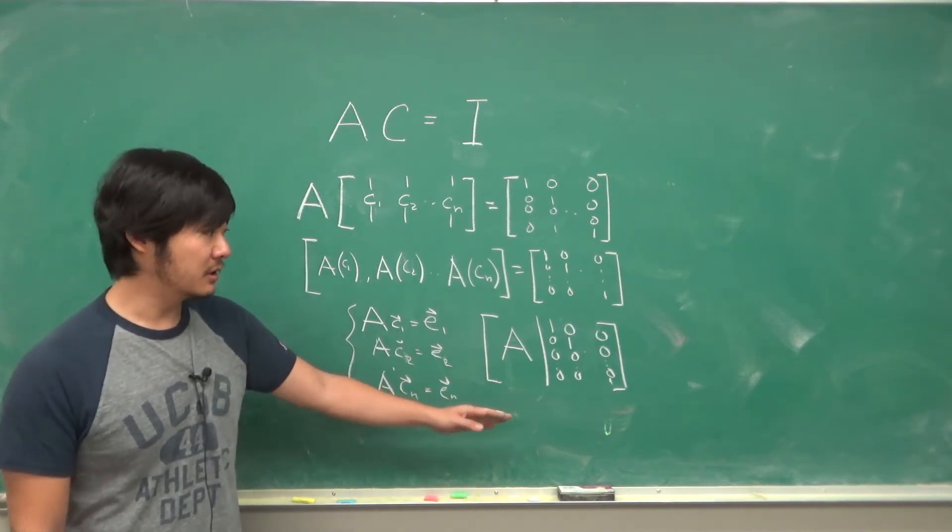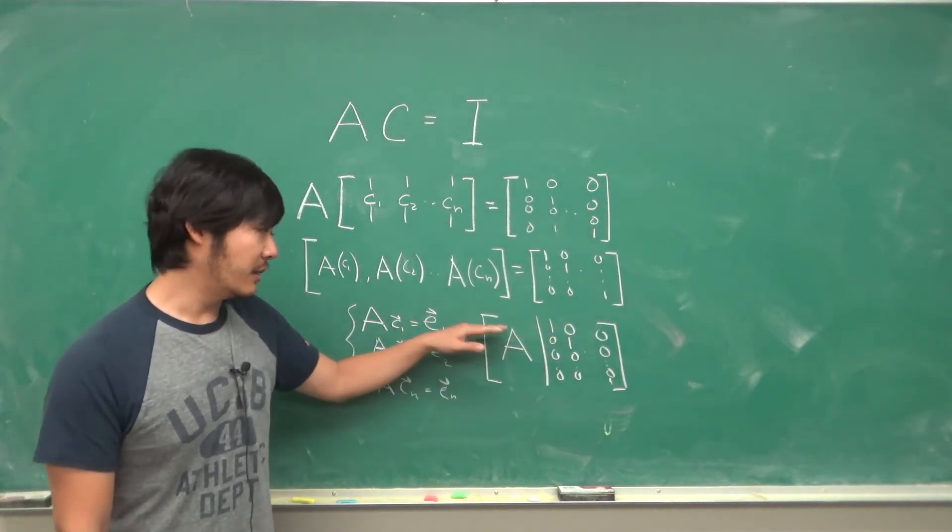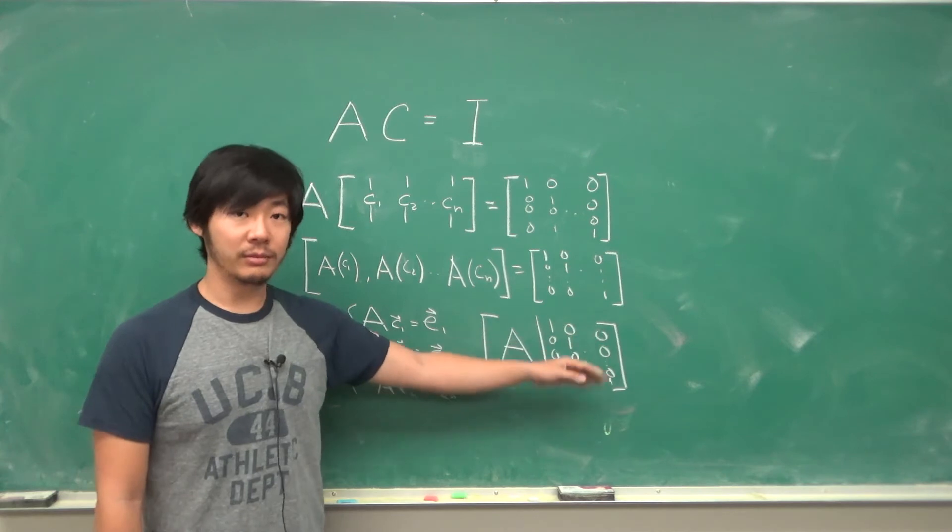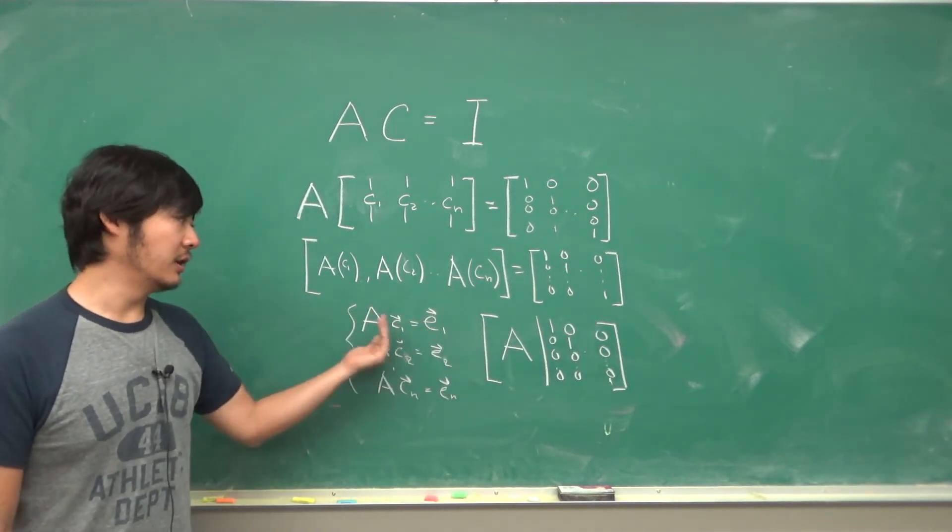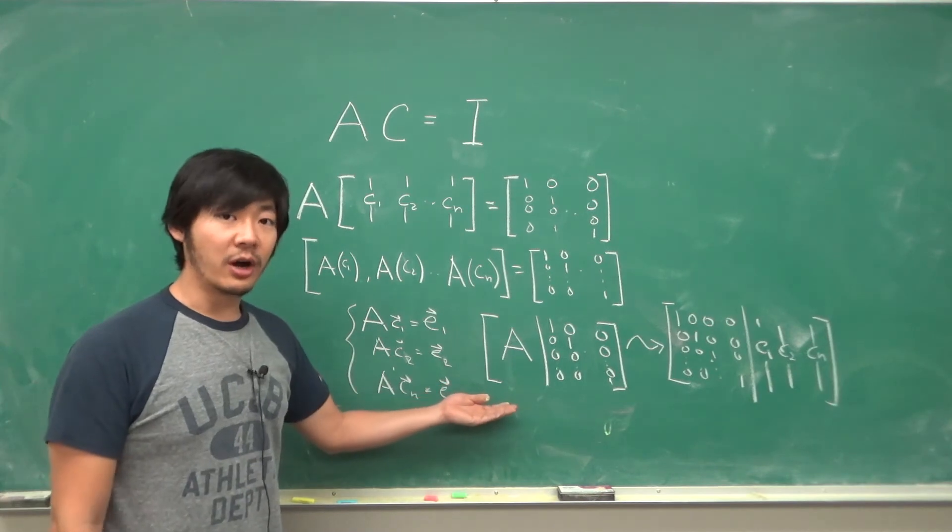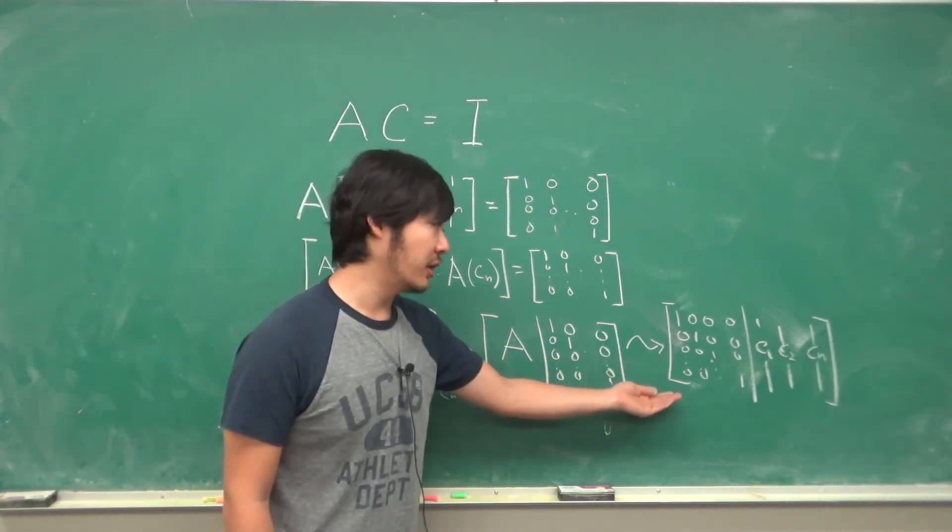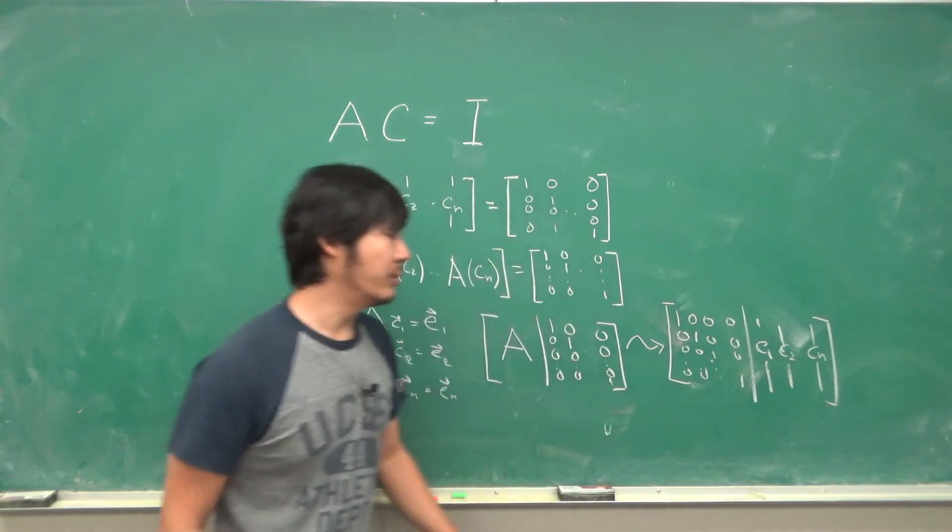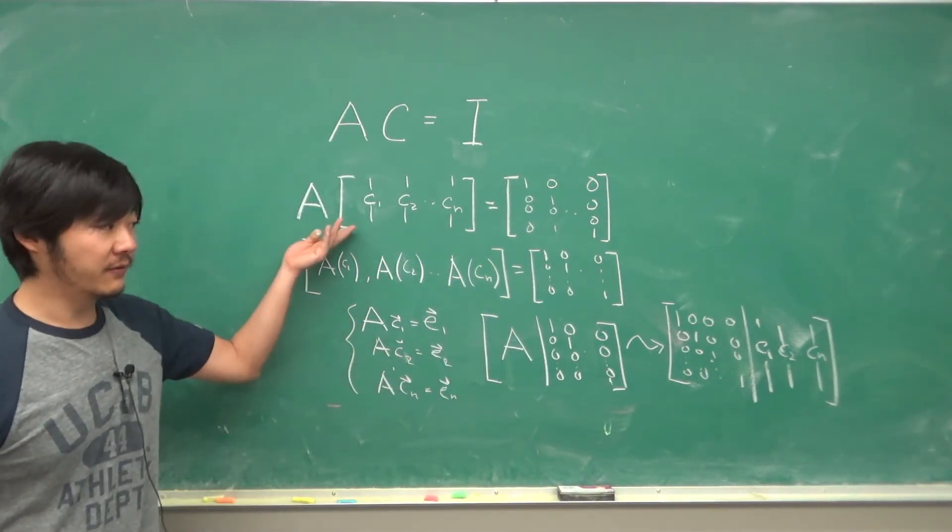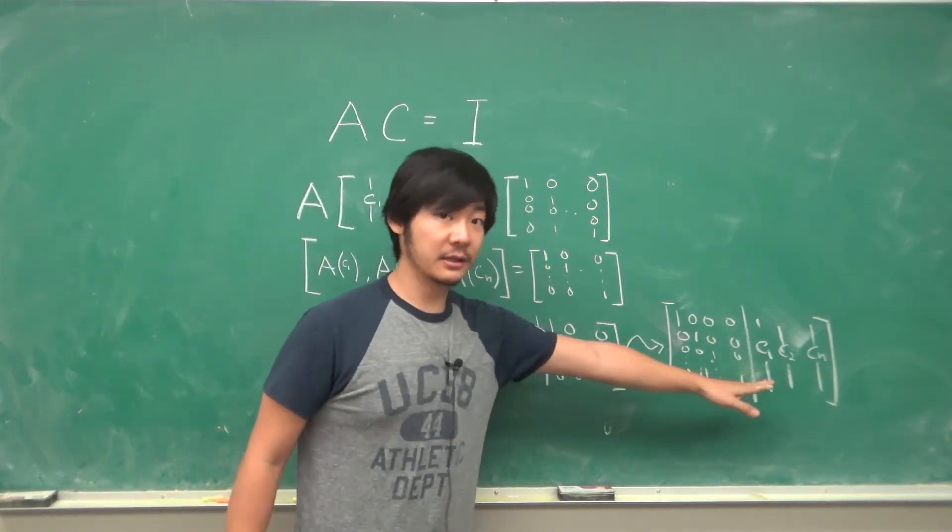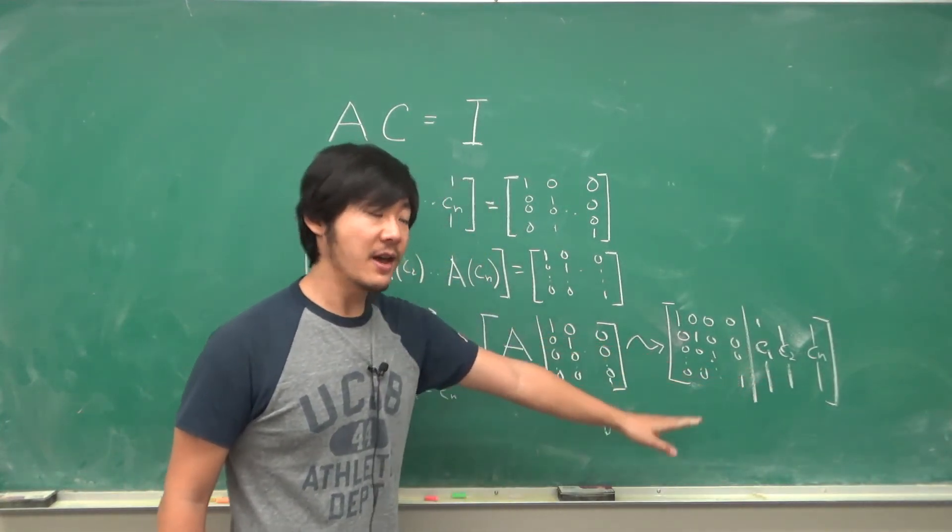We always do row reduction to make A into its reduced row echelon form, and the last columns of these augmented matrices get applied the same row operations but it becomes the solution to the linear equations. So once we do our row operations to make this side a reduced row echelon form, on this side will be the solution to these linear equations which are the columns of your inverse. So this would be the inverse of A.